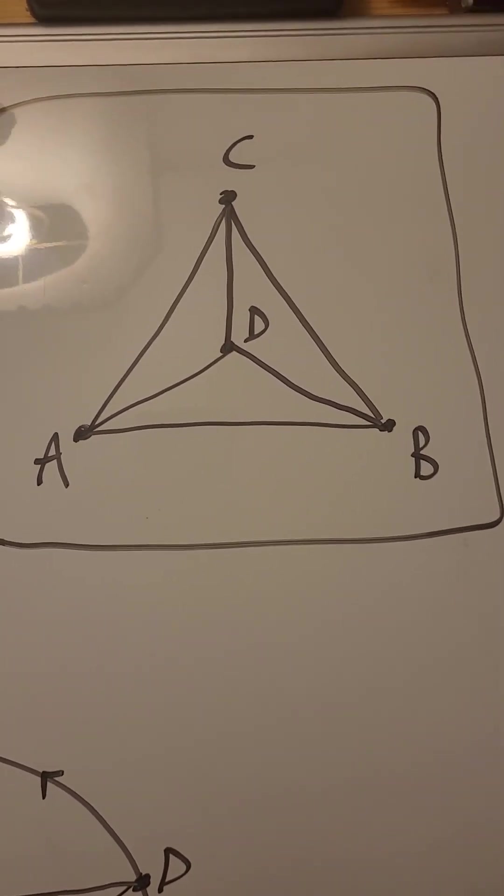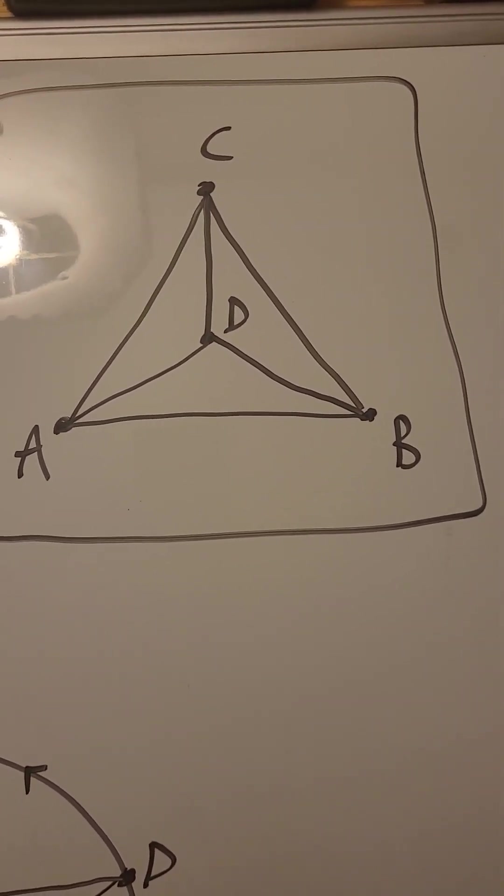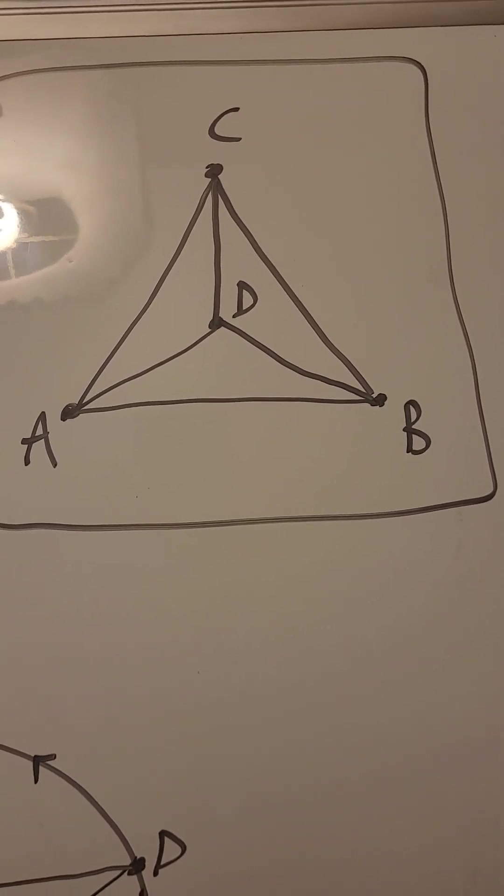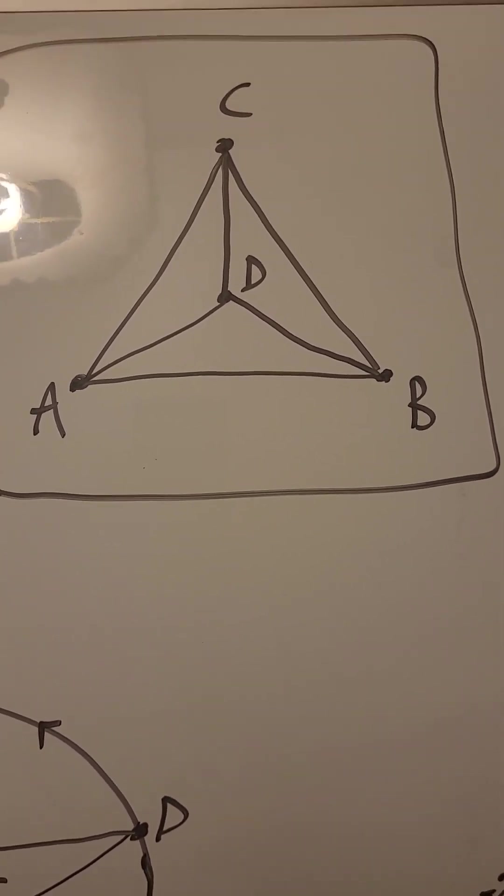Hello everyone. Today I'm going to be demonstrating two different ways to embed the complete graph of seven vertices onto the surface of a torus.